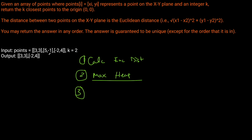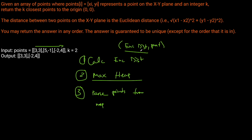We run through all of our points, and at the end the max heap will be size k and contain the k closest points. We store tuples in the heap: the first element is the Euclidean distance (which the heap arranges itself on), and the second is the point itself. We need the point later to extract the answer, and storing them together avoids needing a separate dictionary mapping — especially when two points could share the same Euclidean distance.